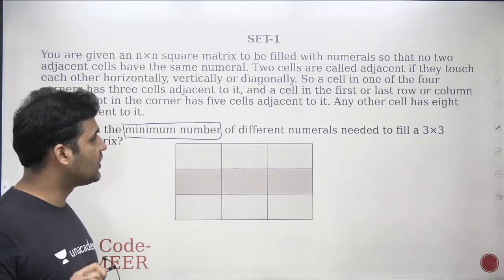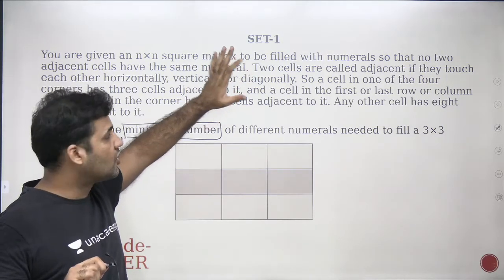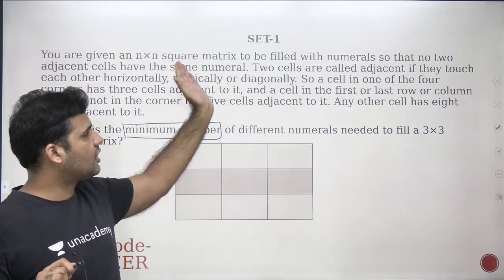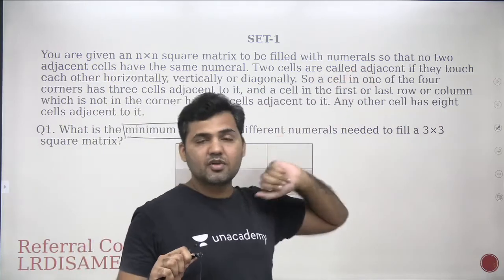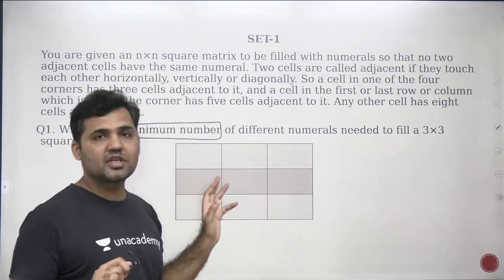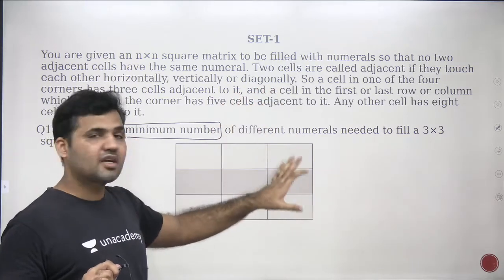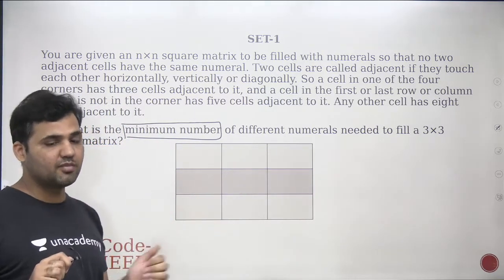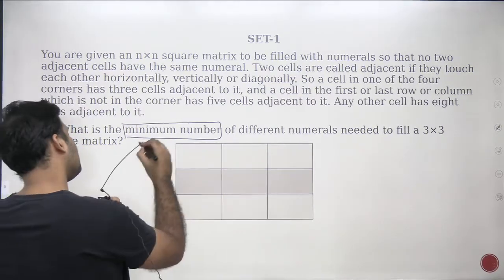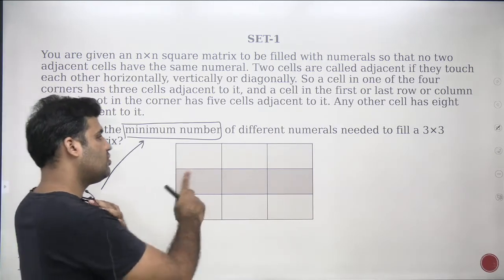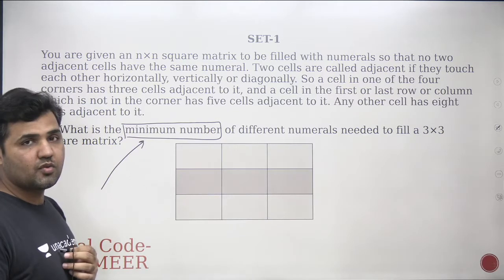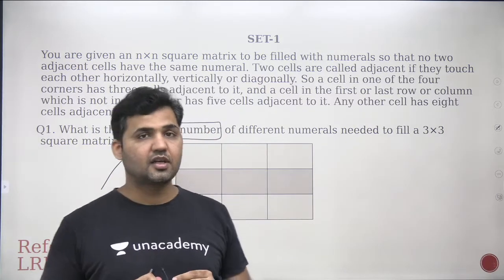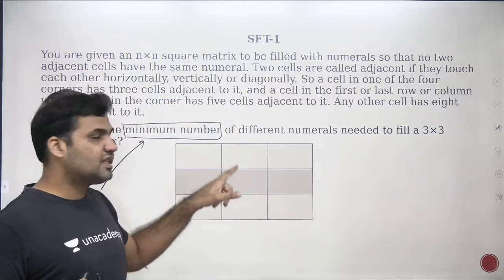The question is very easy — you will get your answer in one second once you understand the information. In reasoning, most of the time it's about understanding and your attention to small words. If somebody simply reads through the information without understanding what exactly is the meaning of adjacent practically, that person will definitely make a mistake. So make yourself understand the statement before you go to the answer. I need to minimize the number of numerals to fill a 3 into 3 square matrix. I will try to fill one single numeral at as many places as possible, with the condition that two adjacent cells should not have the same number.